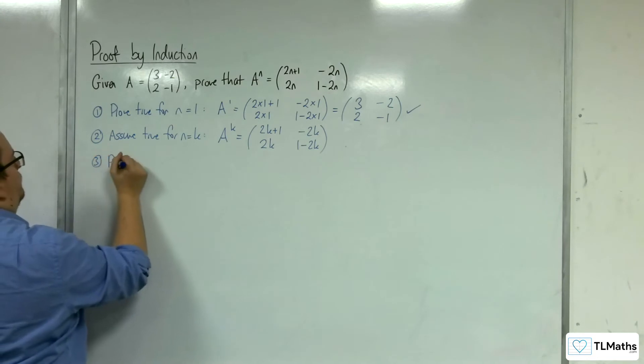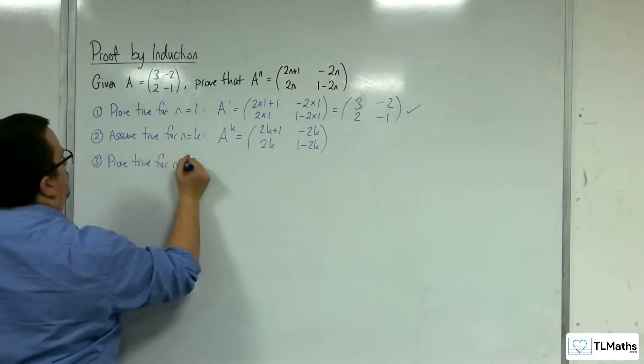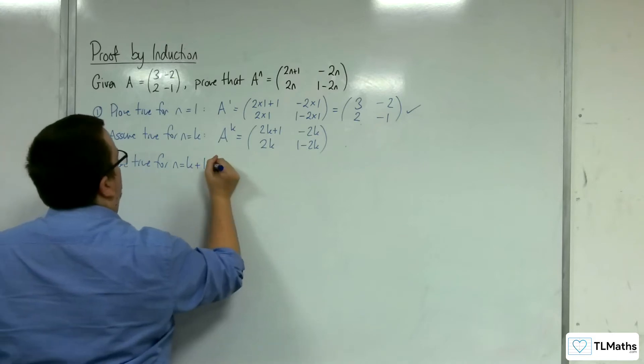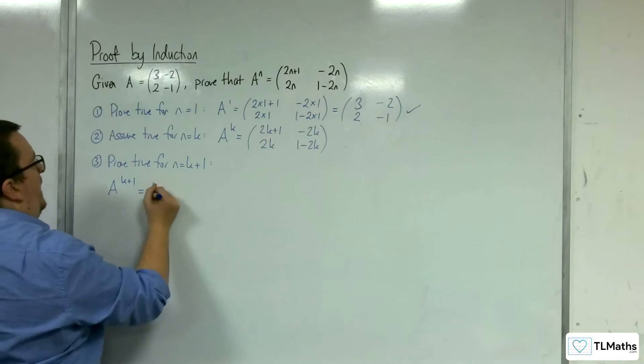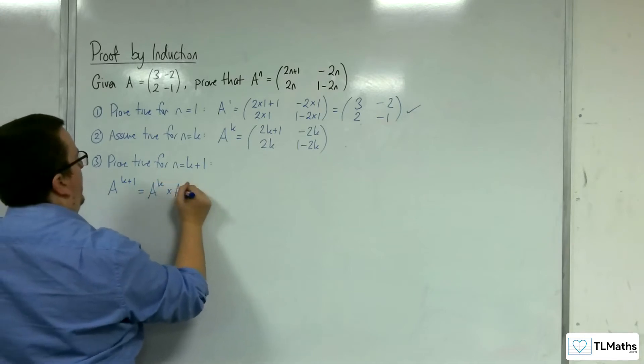Step 3, we need to prove that it's true for n equals k+1. So A^(k+1) is going to be A^k times A^1.